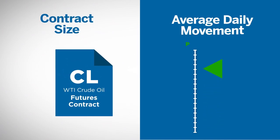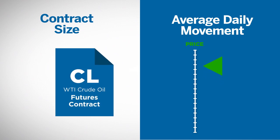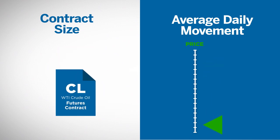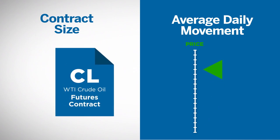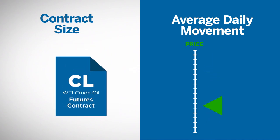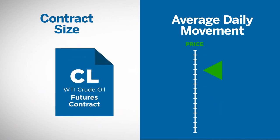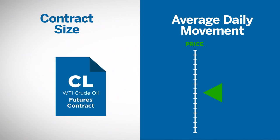Before entering a position in the futures market, it's critical that a trader understand how any price fluctuation can impact their bottom line. In addition to contract size, it is also important to understand the relationship between the size of the contract and the contract's average daily move. These two numbers can help you determine the potential profit and loss range that could be expected over one trading day.